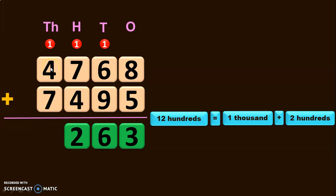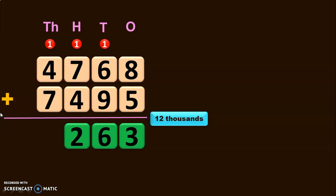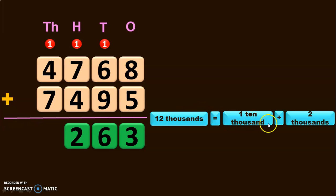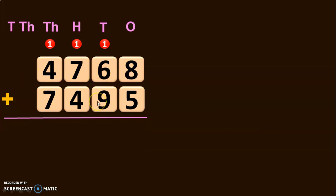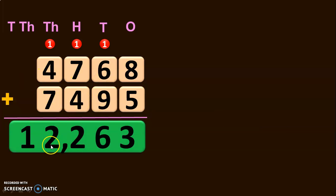12 hundreds can be regrouped as 1,000 plus 2 hundreds. So the 2 hundreds is retained in the hundreds place and the 1 thousand is carried over to the thousands place. 1 plus 4 will give you 5, and 5 plus 7 will give you 12 thousands. Now you are going to regroup the digits in the thousands place. 12 thousands is nothing but 1 ten-thousand plus 2 thousands. So retain the 2 thousands in the thousands place and move the 1 ten-thousand to the new 5th place value. So the sum of the two 4-digit numbers gives the 5-digit answer 12,263.